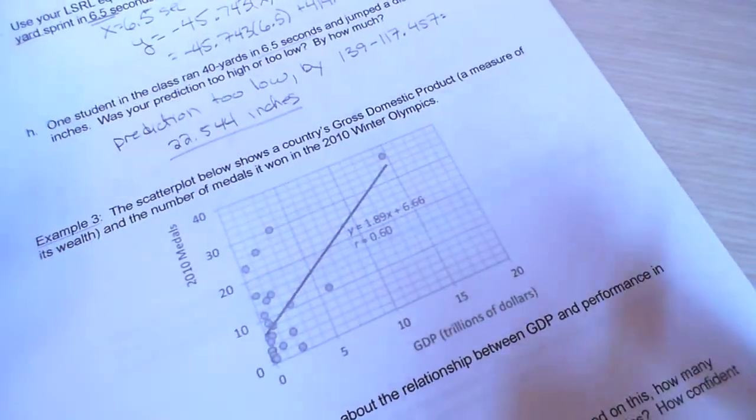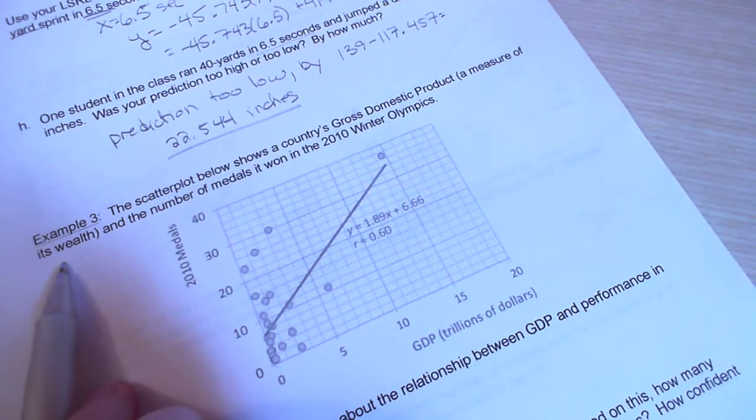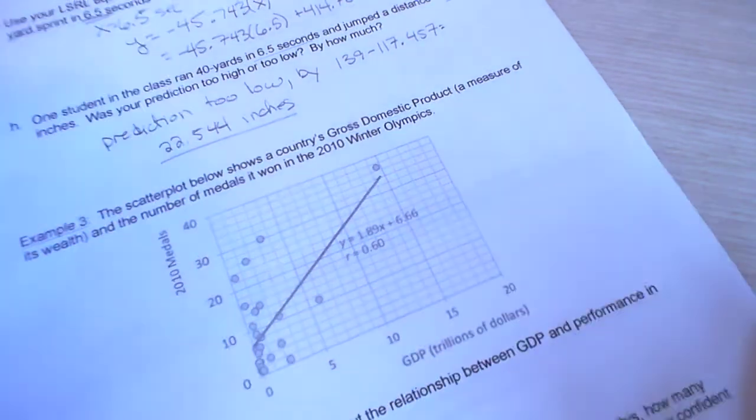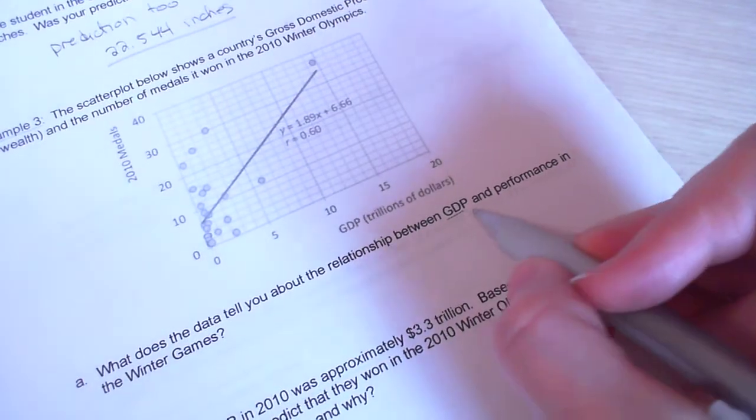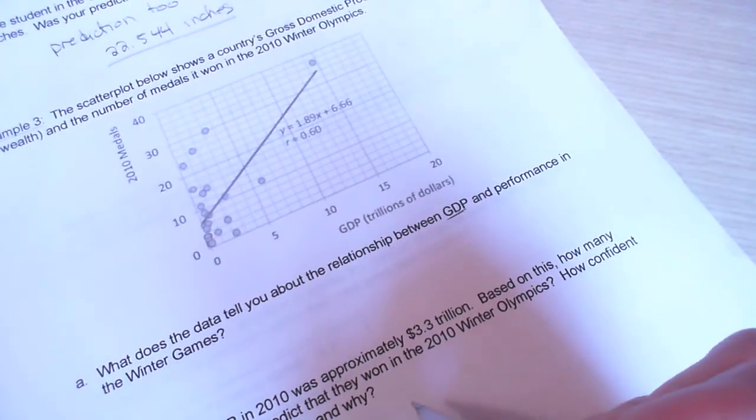Now, let's take a look at example three. Scatter plot below shows a country's gross domestic product. It's one way to measure a country's wealth. And the number of medals it won in the 2010 Winter Olympics. What does the data tell you about the relationship between gross domestic product and the performance in the Winter Games?